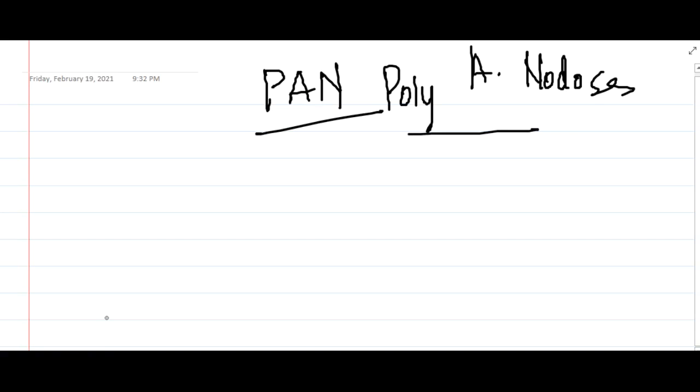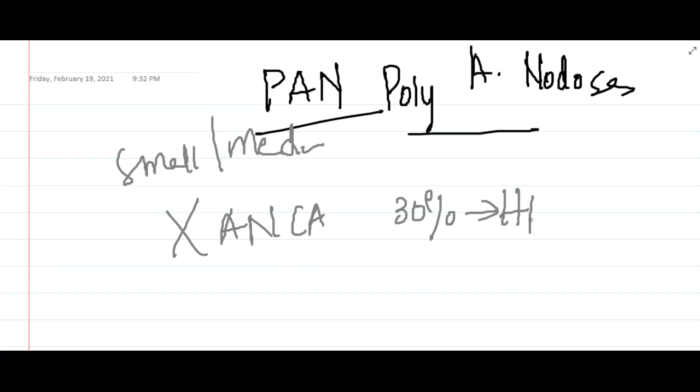Hello friends, let us now learn some important points about polyarteritis nodosa. This is actually a systemic vasculitis involving small or medium sized arteries. It has no association with ANCA but only 30% of patients with polyarteritis nodosa are associated with hepatitis B surface antigens.